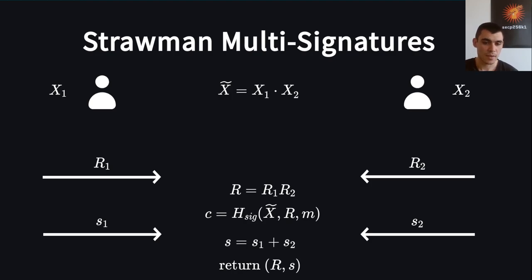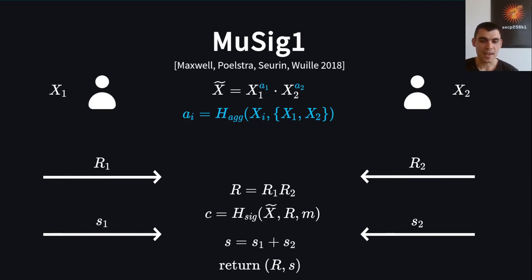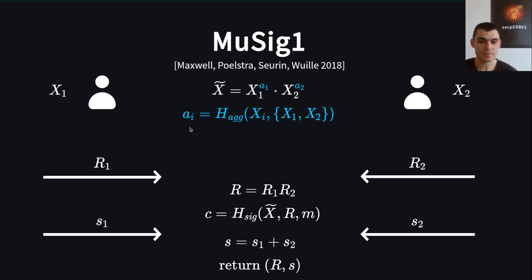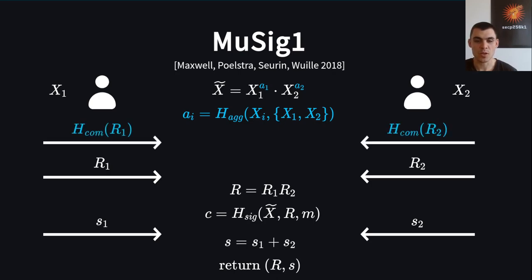This scheme is insecure for two reasons. The first is that it's vulnerable to rogue key attacks, in which the attacker chooses his public key depending on the victim signer's public key in order to cancel it out. The common defense is to add a proof of possession to each public key — a zero-knowledge proof of knowledge that the owner knows the corresponding secret key. The contribution of MuSig1 was to avoid the need for proofs of possession. Instead, the individual public keys are not just multiplied but have additional exponents derived via a hash function. To create key aggregation exponent a_i, we hash the i-th key together with the multi-set of all keys. The second essential improvement is that MuSig1 has a third round which runs before the other two rounds — everyone sends a hash-based commitment to their nonce before revealing it in the second round.